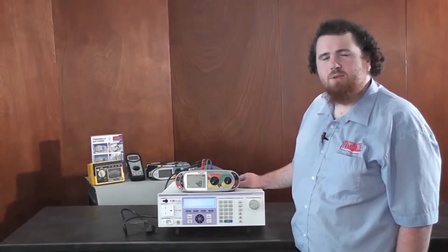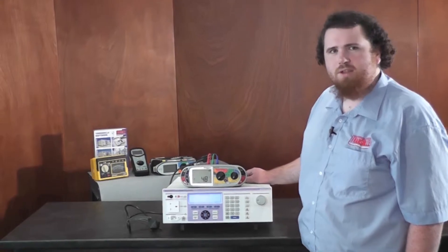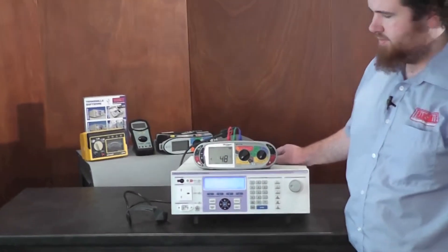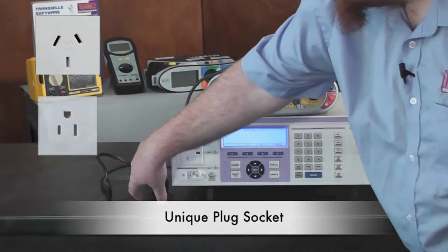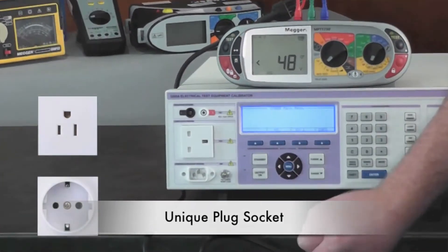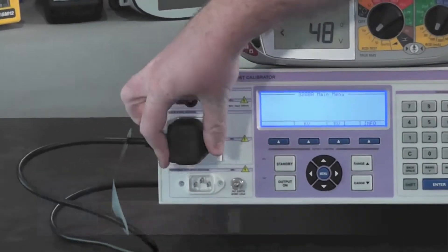Calibrating RCD testers with the 3200A is quick and safe. Using Transmil's unique plug socket on the front of the 3200, testers simply plug in.